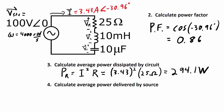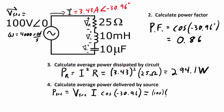The fourth calculation is the average power delivered by the source. Power from the source equals the RMS source voltage times the current times the cosine of the phase angle between voltage and current — in other words, times the power factor. That works out to 100 times 3.43 times 0.86, giving 294.1 watts. This is unsurprising because the power used by the circuit must equal the power delivered by the source — power in and power out must balance.